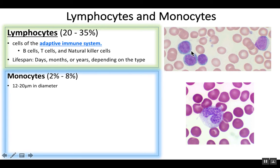Lymphocytes look very boring under the microscope. They have a purple nucleus surrounded by a little bit of bluish cytoplasm. They're not the largest white blood cells, but they're a bit variable — sometimes they're bigger, sometimes they're smaller. These four are all examples of lymphocytes.